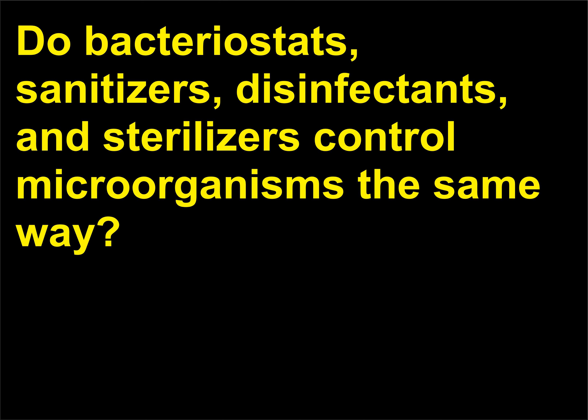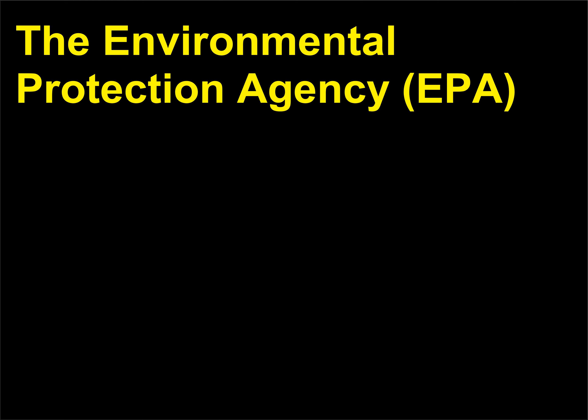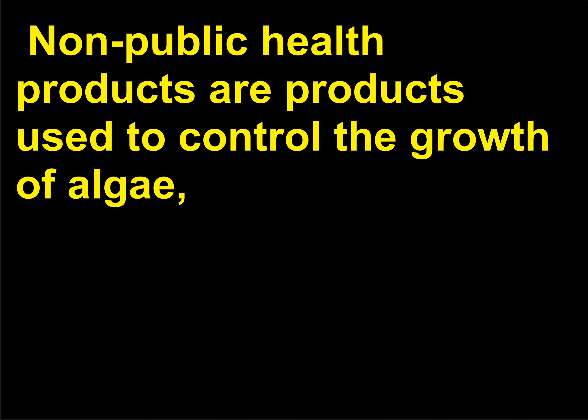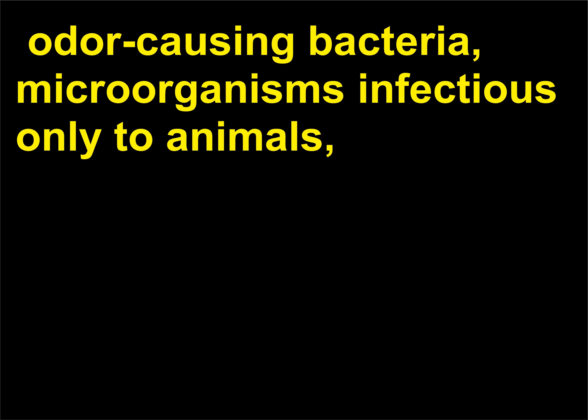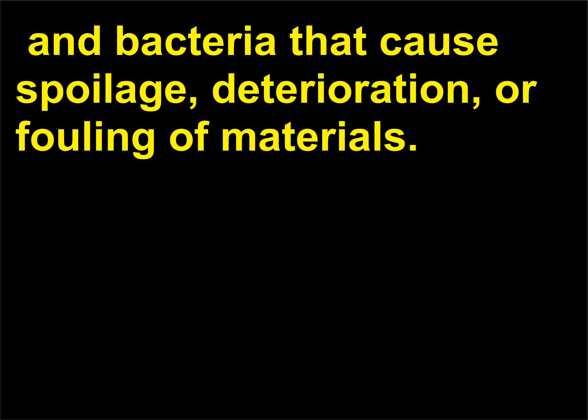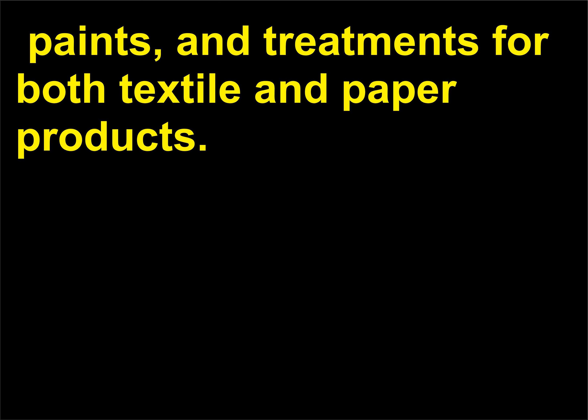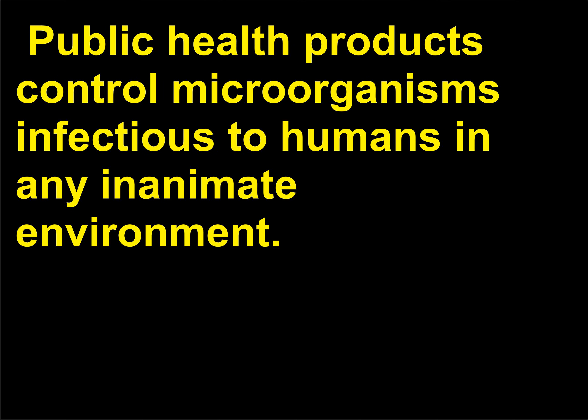Do bacteriostats, sanitizers, disinfectants, and sterilizers control microorganisms the same way? The Environmental Protection Agency (EPA) classifies antimicrobial agents as non-public health products and public health products. Non-public health products are used to control the growth of algae, odor-causing bacteria, microorganisms infectious only to animals, and bacteria that cause spoilage, deterioration, or fouling of materials. Examples of non-public health products are jet fuel, paints, and treatments for textile and paper products.